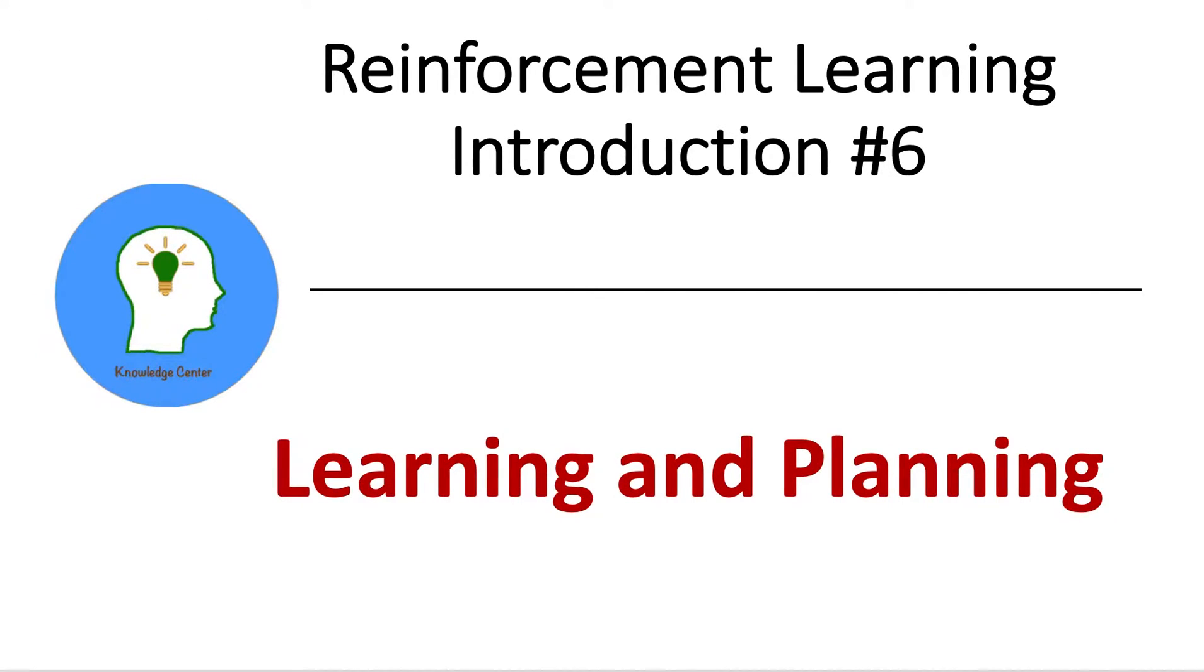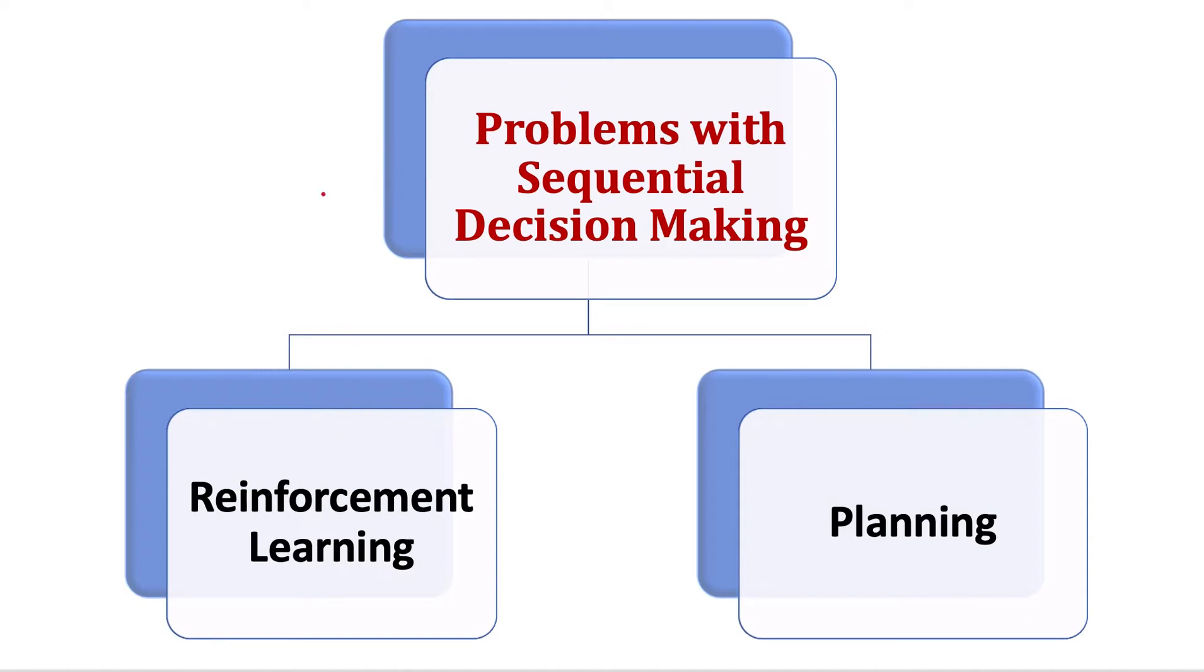Learning and planning are two important concepts in reinforcement learning. With sequential decision-making, there are two fundamental types of problems: one is reinforcement learning and the second is planning. So let's see what the difference is between these two.